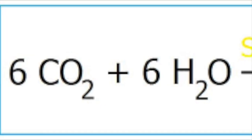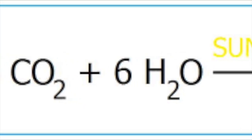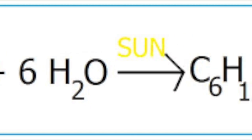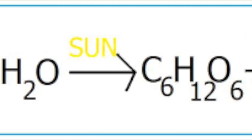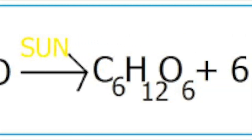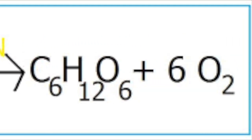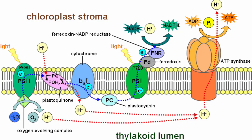Sunlight, 6H2O and 6CO2 — this process consists of two parts, and we're gonna tell you.